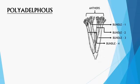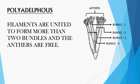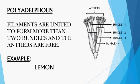The third type is polyadelphous — 'poly' means many. The filaments are united to form more than two bundles, and the anthers are free. In the photograph, the filaments of the anthers are united into four different bundles. This condition is called polyadelphous. Example: lemon or citrus flowers.